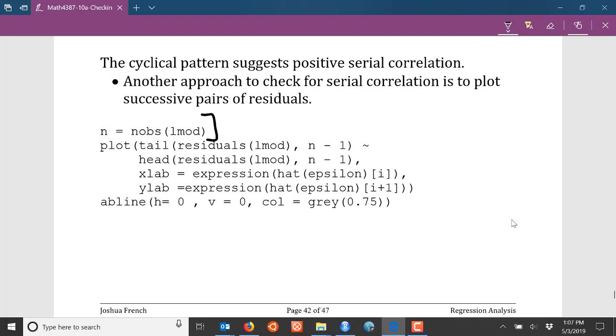The tail function right here is going to grab the last n minus one observations, last n minus one residuals for my fitted model. The head function is going to grab the first n minus one observations of my residuals from the residuals of my fitted model.